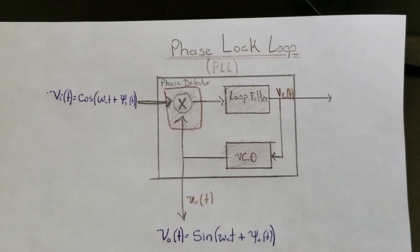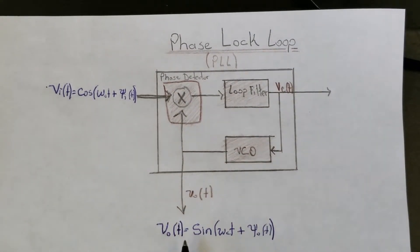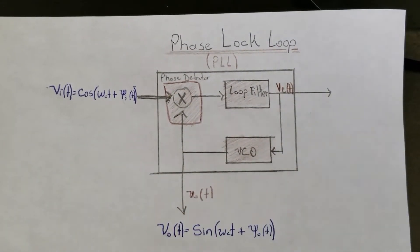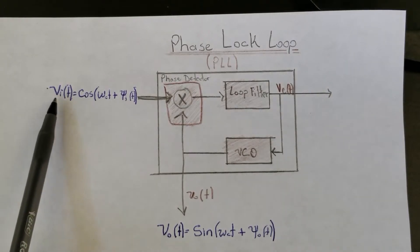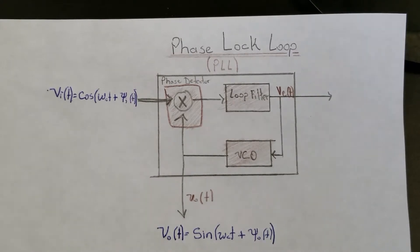And again, because this is a closed loop configuration, if no changes take place in the input there should be no changes in the output. However, if a change does take place in the input, then the output should be able to track the input within a reasonable range of operations.